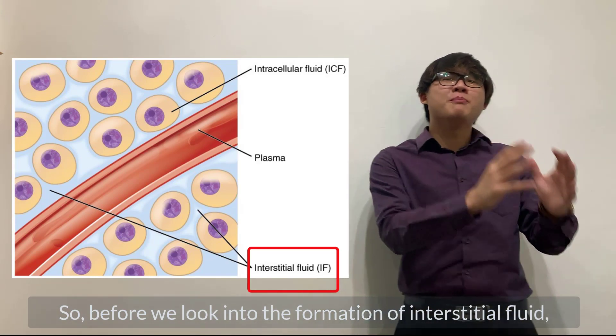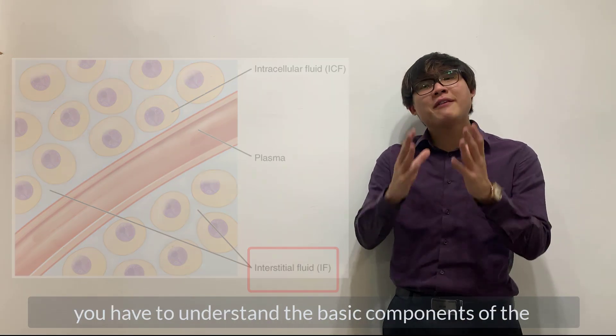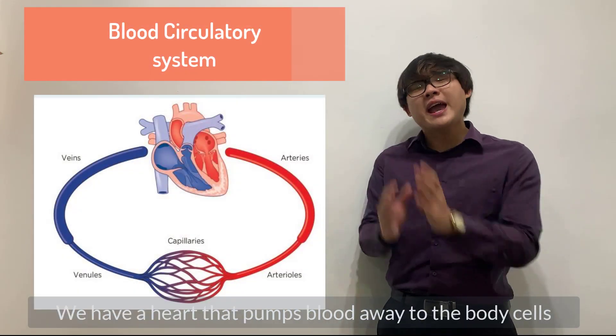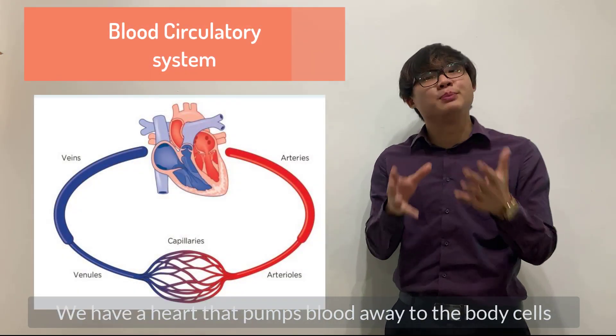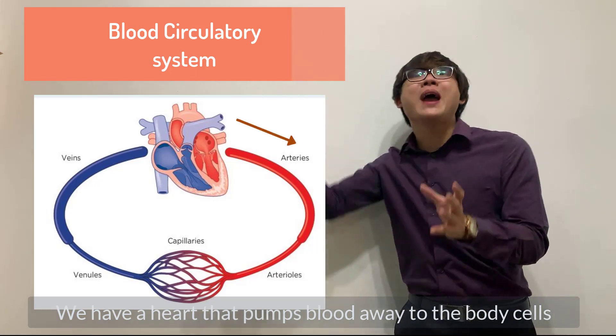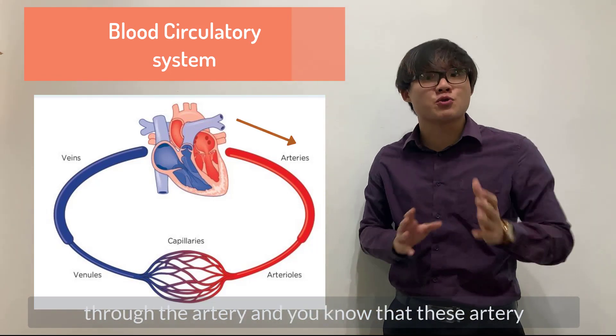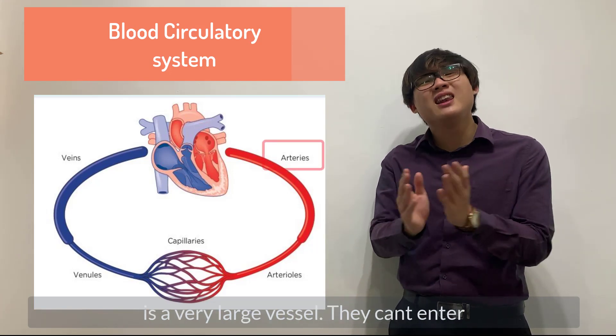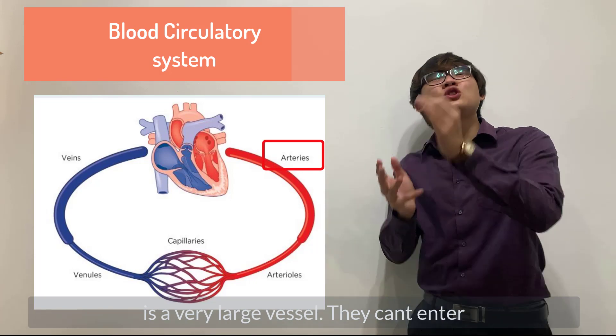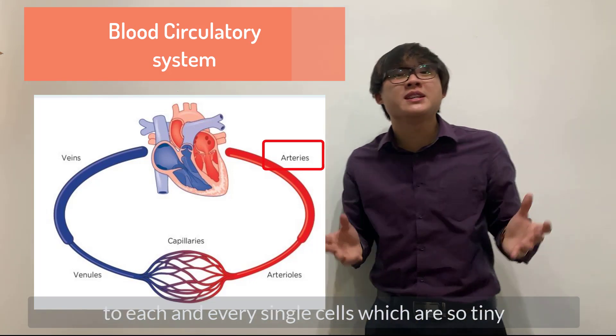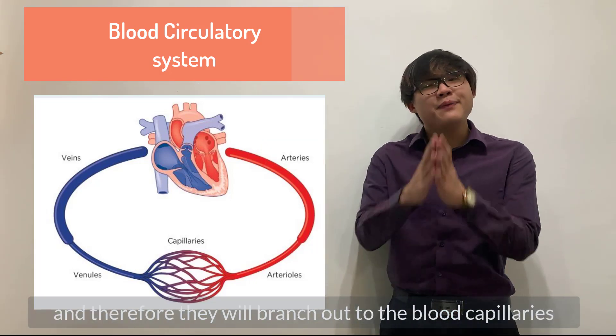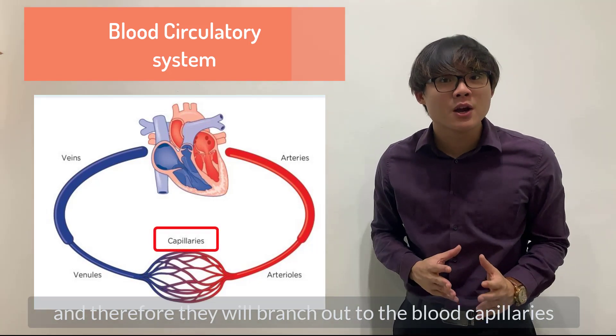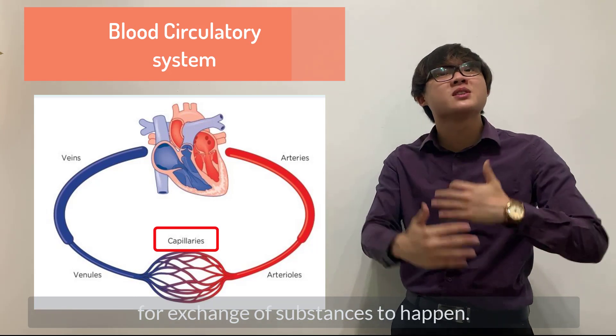Before we look into the formation of interstitial fluid, you have to understand the basic components of the blood circulatory system. We have the heart that pumps blood away to the body cells through the artery. You know that this artery is very large vessels. They can't enter to each and every single body cell which are so tiny. Therefore, they will branch out to the blood capillaries for exchange of substances to happen.